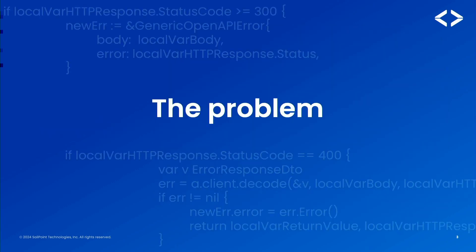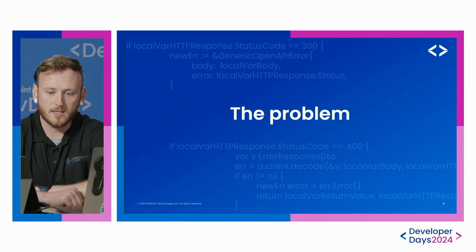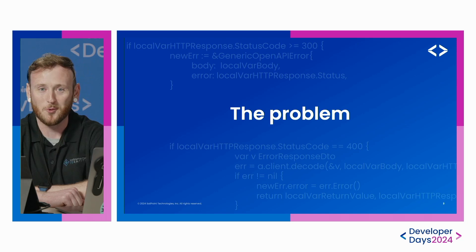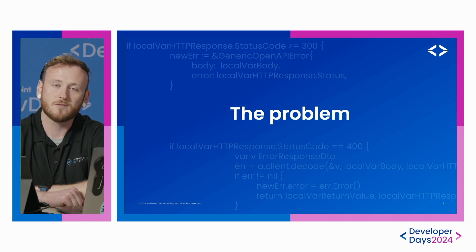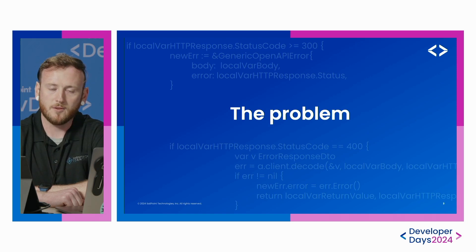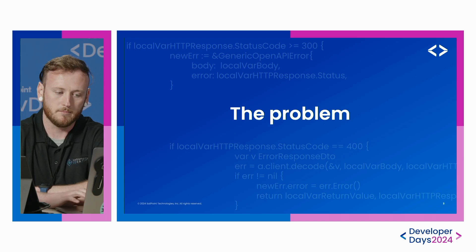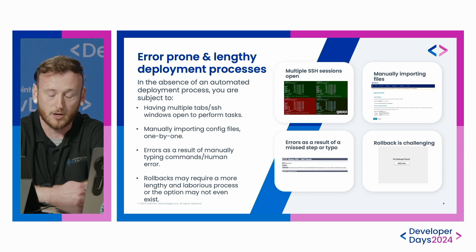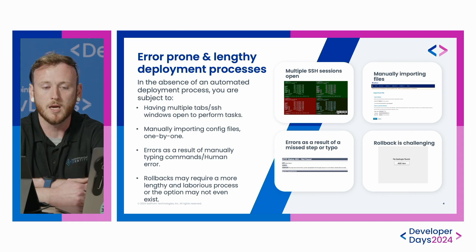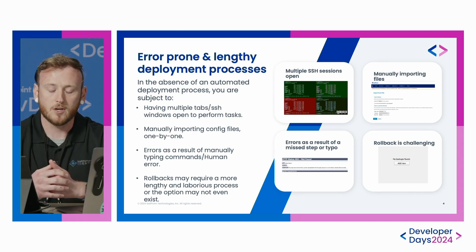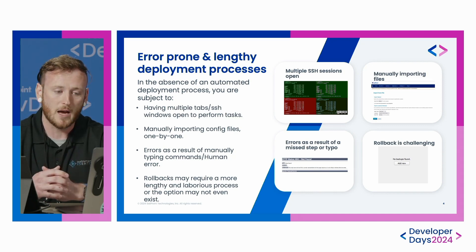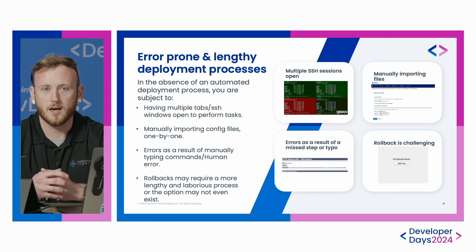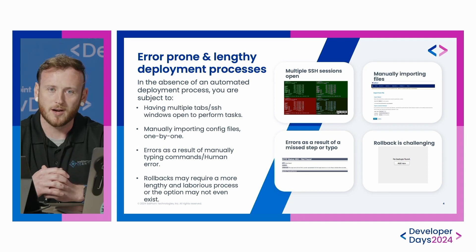A very common outcome of a bad deployment is going to be late night troubleshooting, trying to figure out why configuration settings didn't get pushed out. These can go as far as full outages of an environment, leading you to have to do very costly rollbacks. One of the issues that can cause these major outages is human errors from having multiple tabs or SSH sessions open during your deployment process — having a session open to your IIQ servers and another to clone the latest version from your repository, getting confused between those different SSH views.